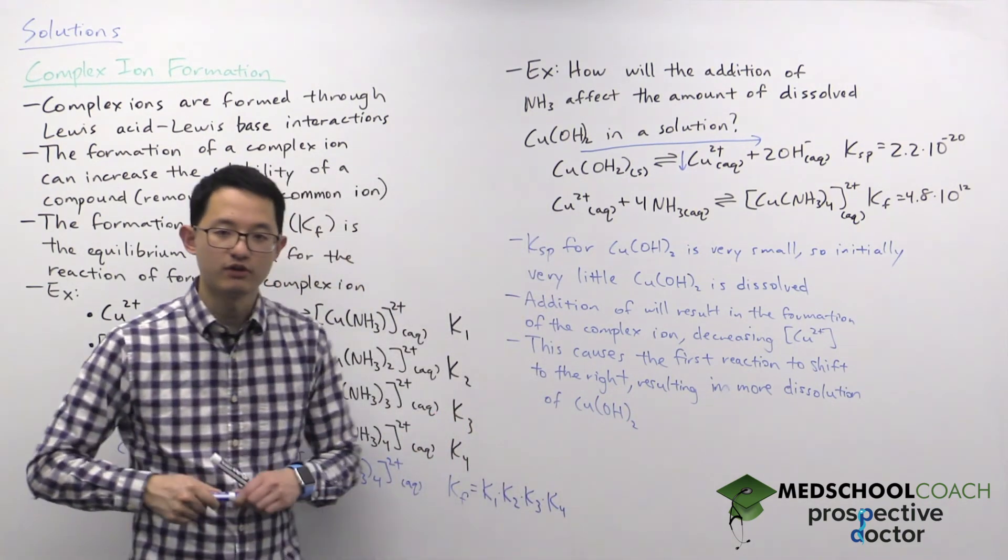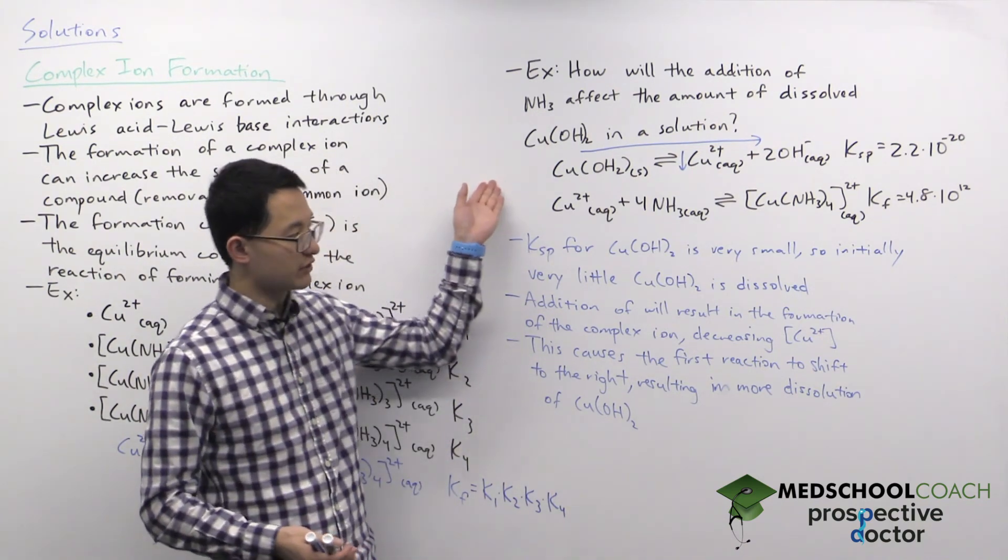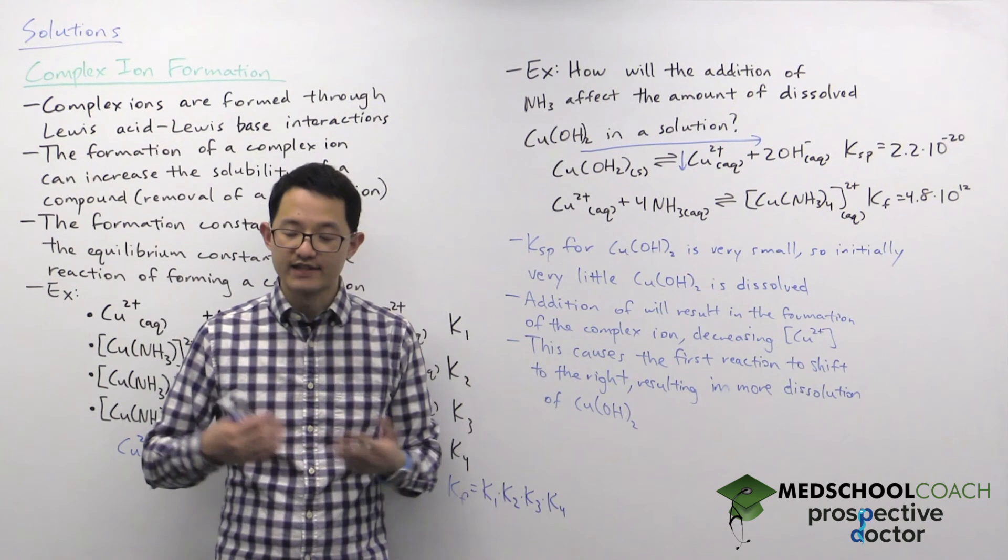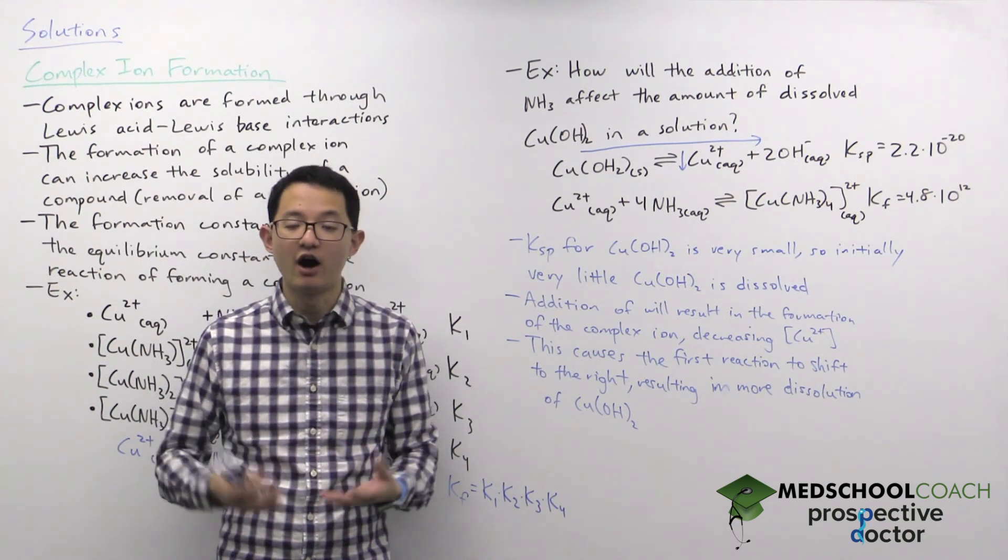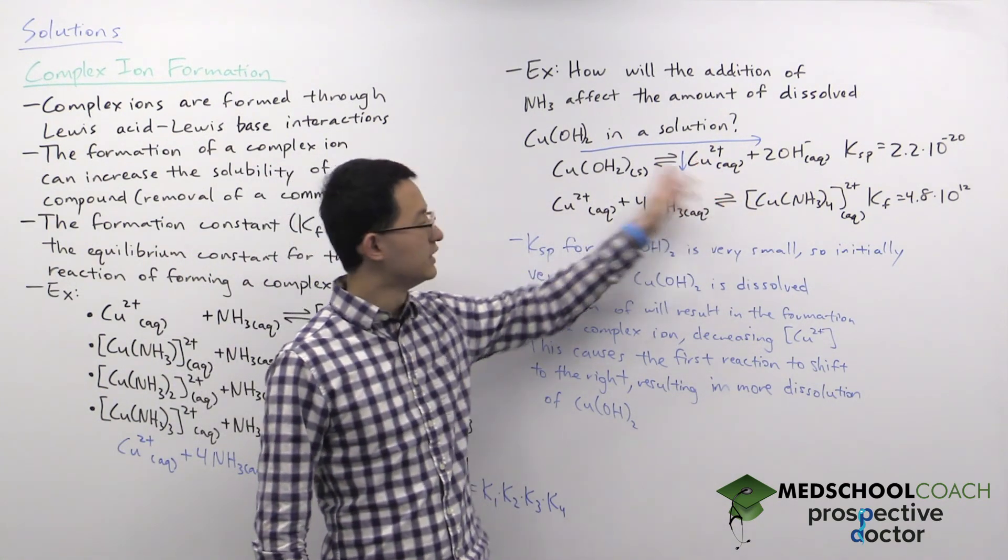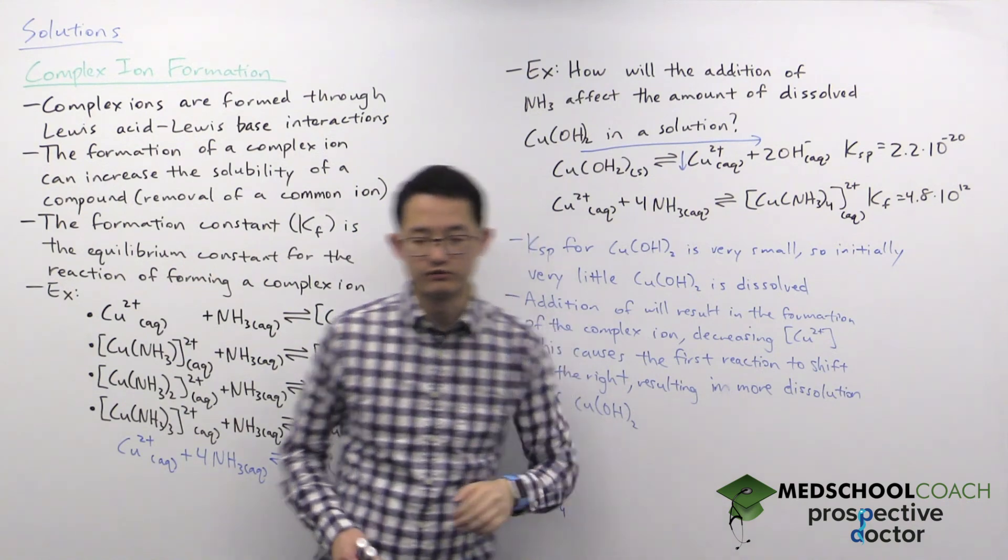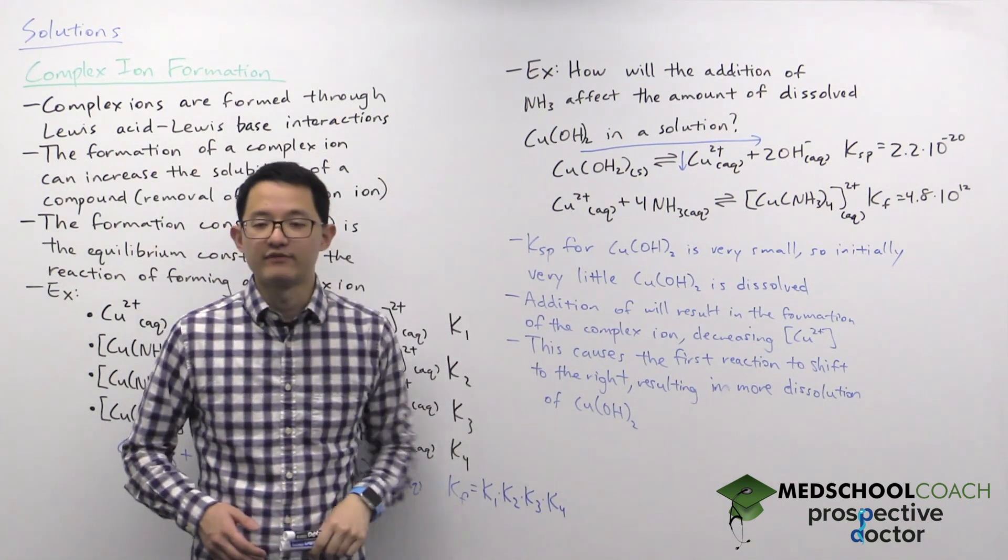Okay so in short, when this complex ion was formed more of the original solute dissolved, and as I mentioned this is essentially just the removal of a common ion. When you formed the complex ion you removed copper so that caused more of the solute to dissolve. So that's complex ion formation.